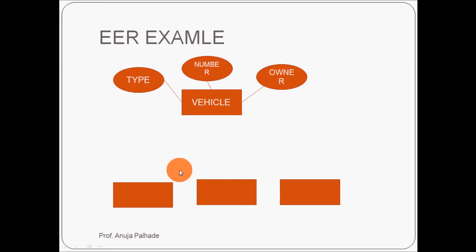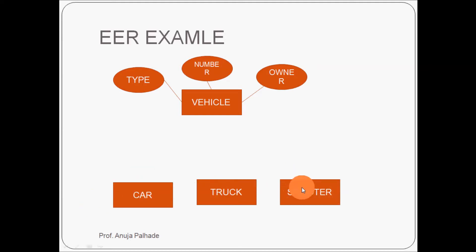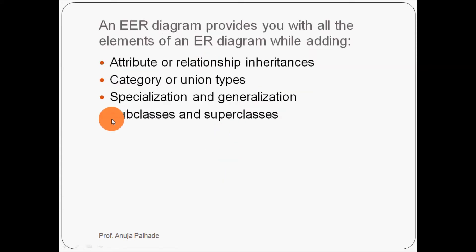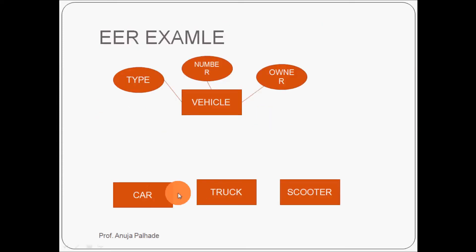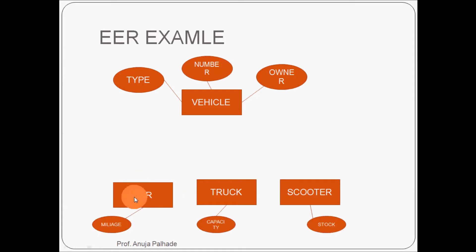I'll add some more attributes here: truck, car, or scooter. Suppose these three are another three entities. Car is a vehicle, truck is a vehicle, scooter is also a vehicle. These are the subclass and superclass concepts we are looking at here. Let's add their own attributes: car has mileage, truck has capacity, and scooter has stock.